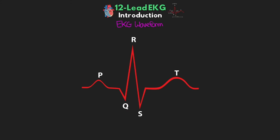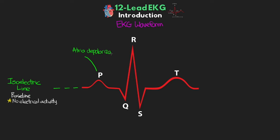To start things off, let's do a quick review of the basic components of our EKG waveform. Here we have an example of a single waveform for a complete cardiac cycle, which tells us about the electrical activity of the heart. First we have our isoelectric line — the baseline of our EKG tracing — representing no electrical activity. Then we have our P wave, which is atrial depolarization, followed by our QRS complex, which is ventricular depolarization, and finally our T wave, which is ventricular repolarization. Atrial repolarization does take place but is minimal on the tracing and buried within the QRS complex, so it's not something we typically see.